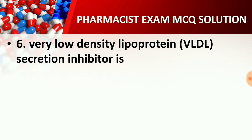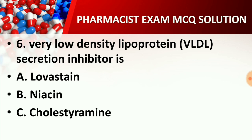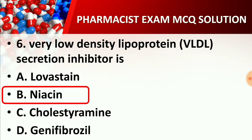Question number six: Very low density lipoprotein (VLDL) secretion inhibitor is — Option A: Lovastatin, Option B: Niacin, Option C: Cholestyramine, Option D: Gemfibrozil. The right answer is Option B: Niacin. VLDL secretion inhibitor is Niacin. Niacin is also called Vitamin B3.